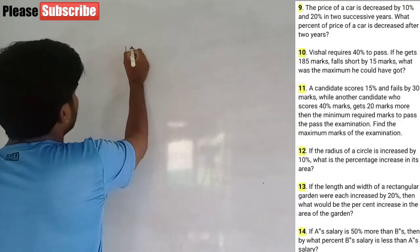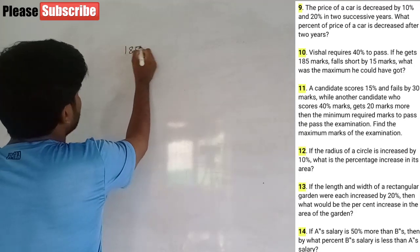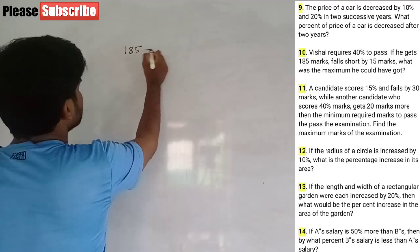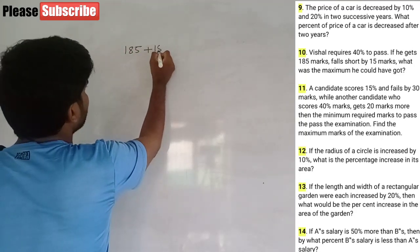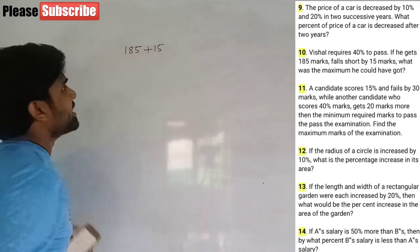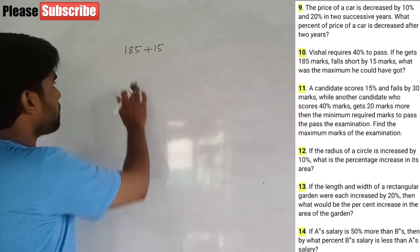He has 185 marks and needs about 15 more marks to pass. So the passing marks are 185 plus 15, which is 200 marks.